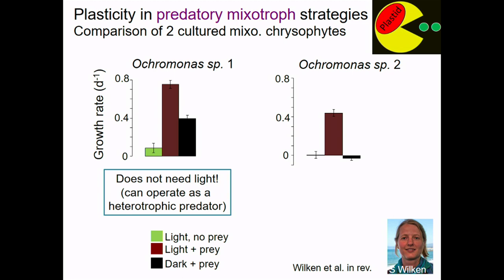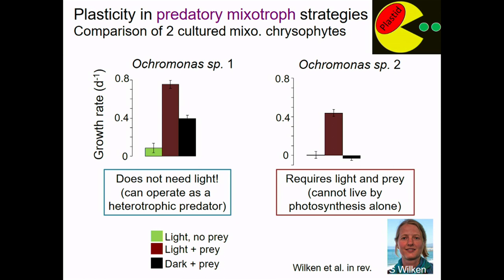We can go to this other species, where if you don't give it prey and only give it light, it won't grow at all. If you put it in the dark without light but give it prey, it won't grow at all. But if you give it light and prey, it's quite happy. This guy requires both light and prey — it cannot live by photosynthesis alone. This is where we get into this idea in oceanography: we love big chlorophyll measurements of the whole ocean, but the details of cell biology really matter if you want to get predictive.